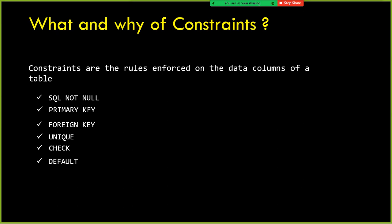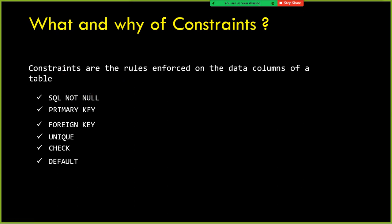Why do we need to enforce rules on the columns? At the time of defining the table, when you define or create the table definition itself, if you enforce rules — such as, let's say, I have an Aadhaar number or social security number — this column should not have null values in it.